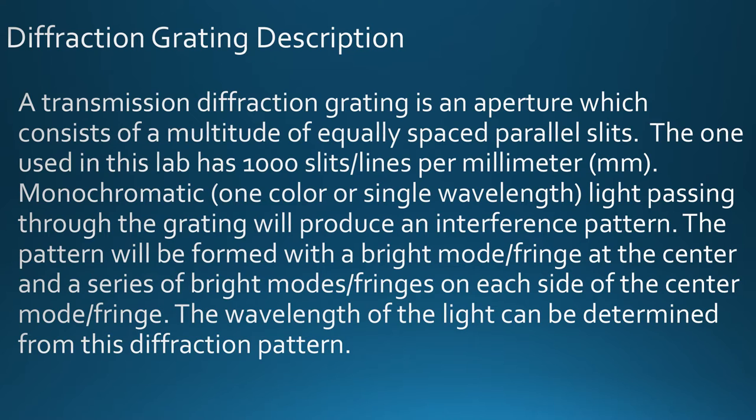Monochromatic or one color light passing through the grating will then produce an interference pattern. The pattern will be formed with a bright mode fringe at the center and several other less bright mode fringes on each side. The wavelength of light can then be determined from this diffraction pattern.